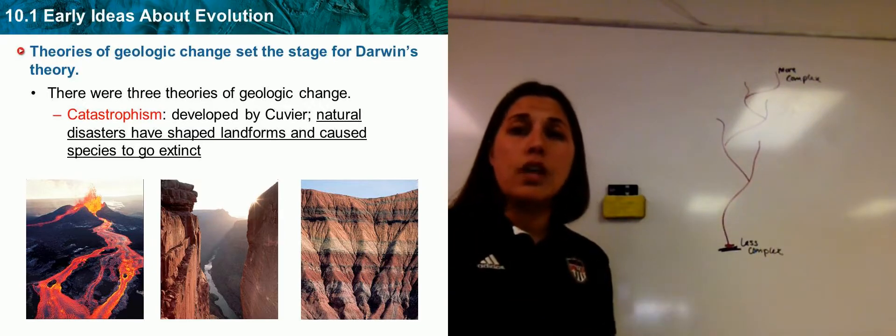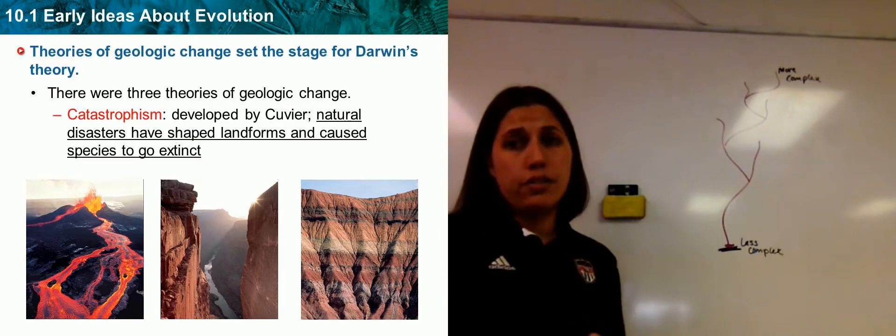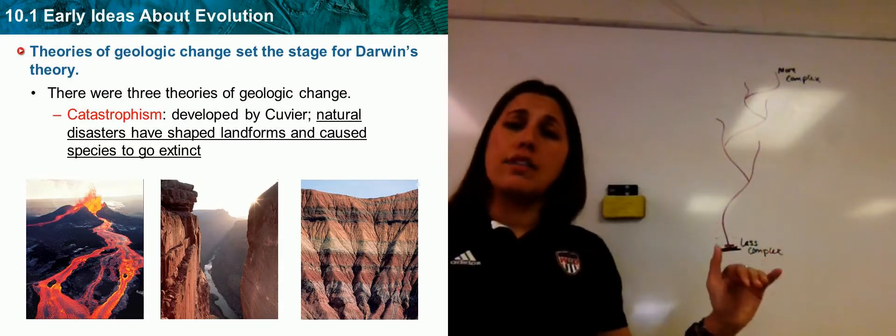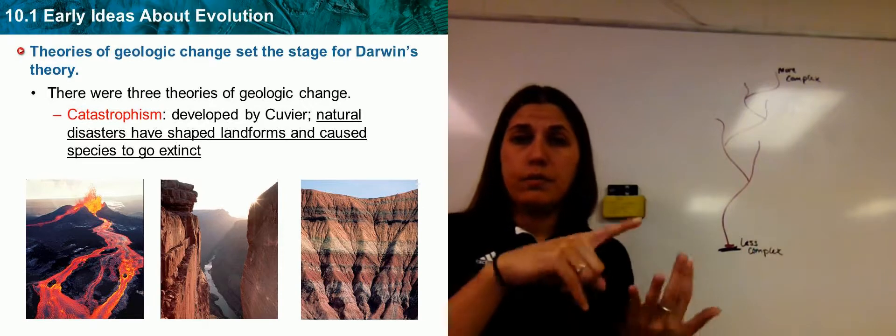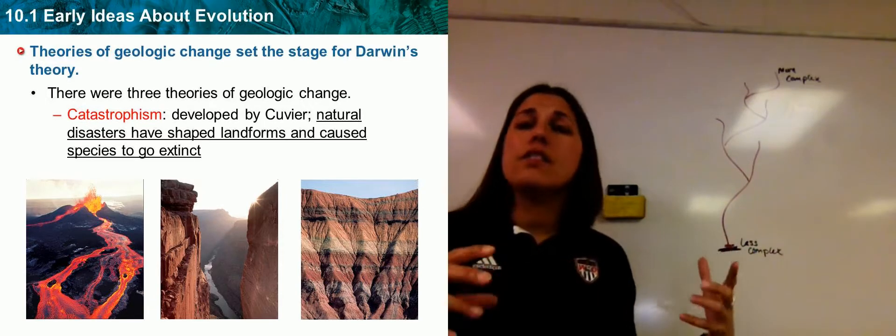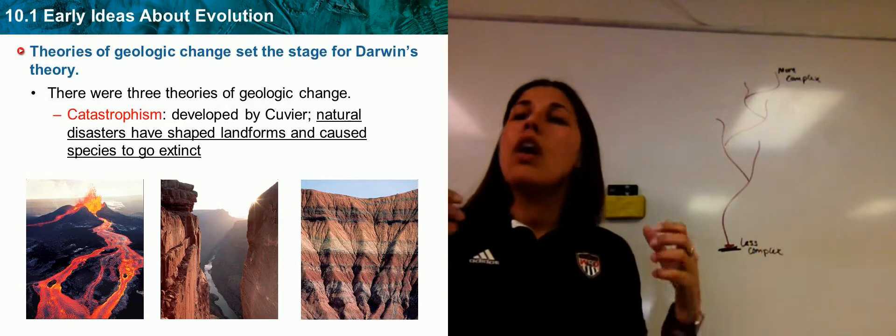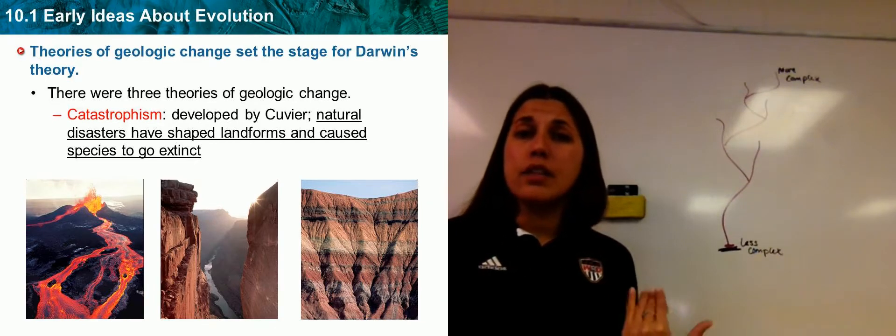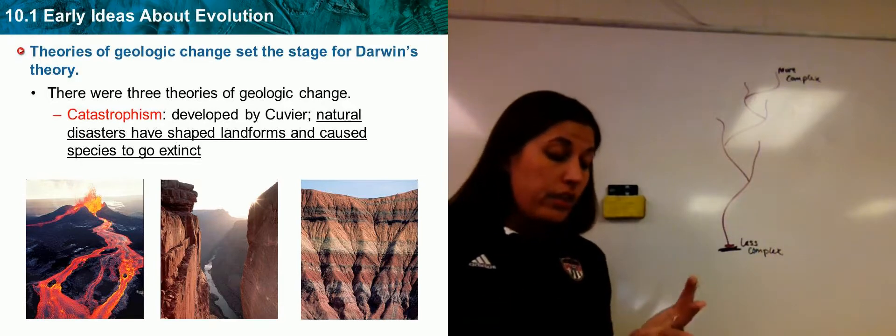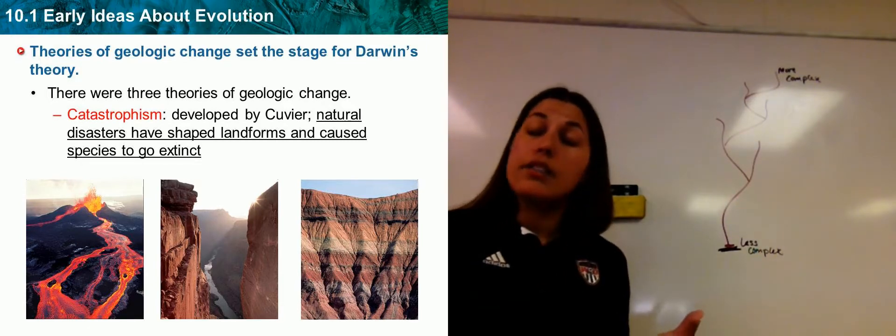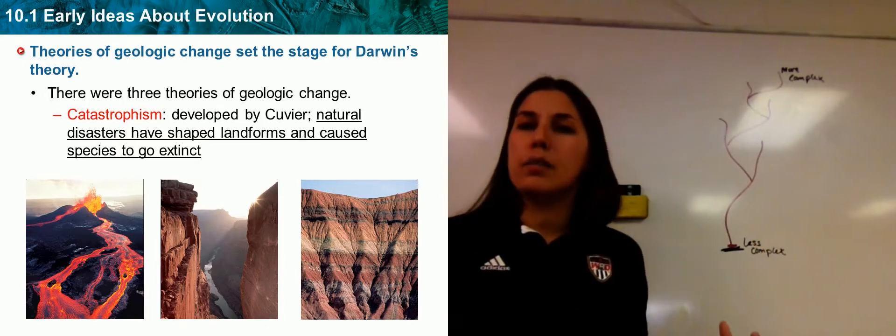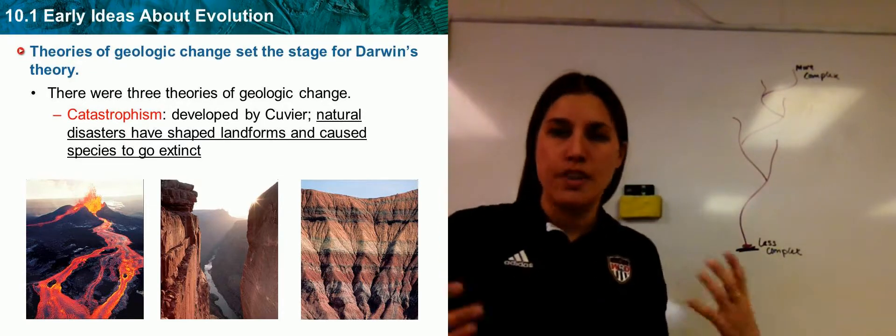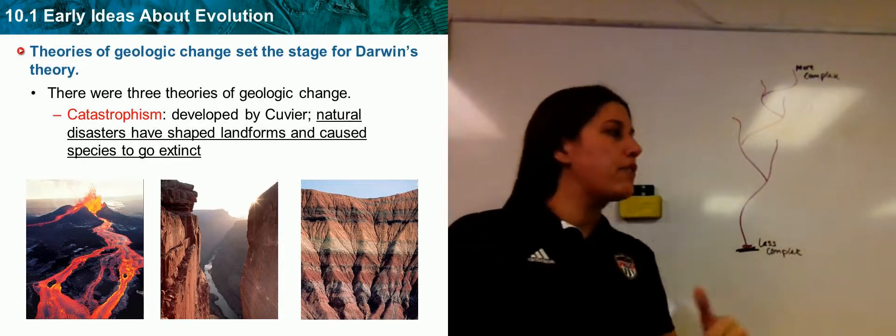Cuvier studied the earth's formations, and what he came up with was a theory of catastrophism. And in catastrophism, he said, the earth has changed over time because of things such as natural disasters. Volcanoes, earthquakes, tornadoes, tsunamis, have all changed our landforms. Not only has it changed our landforms, it's also caused different species to go extinct. Now, catastrophism really does shape the earth. It really does cause the land to change over time, and it really does cause species to go extinct. So, Cuvier was right. He was on to something. But Cuvier didn't have the whole picture, because the whole entire world doesn't change just because of natural disasters and catastrophes.